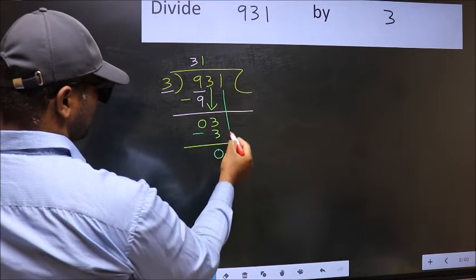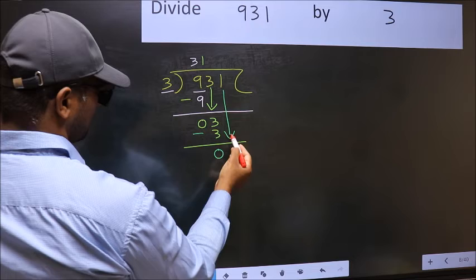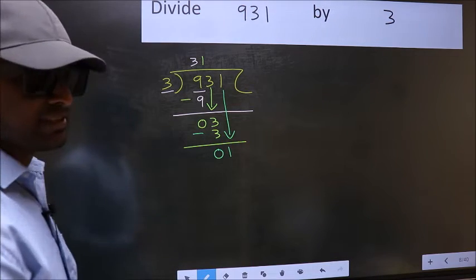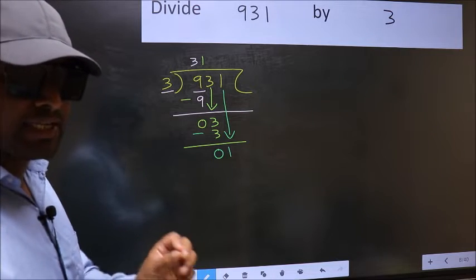After this, bring down the next number. So, 1 down. After this step, the mistake happens. And the mistake is this.